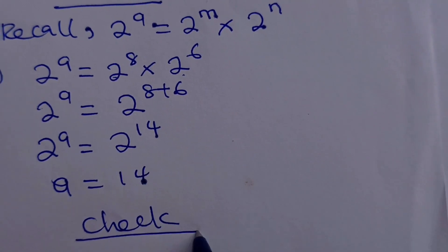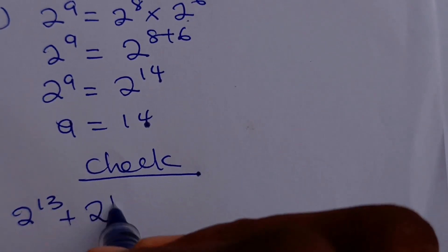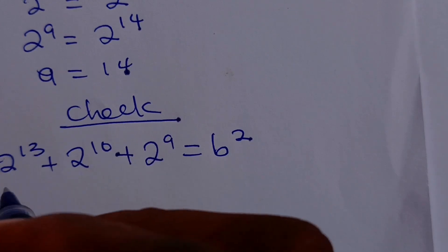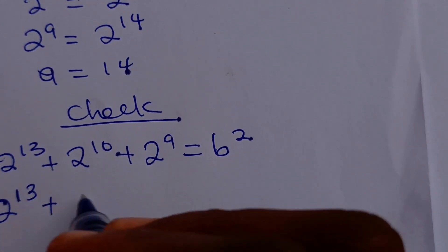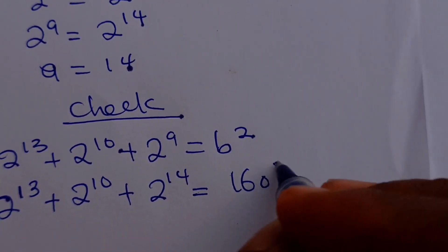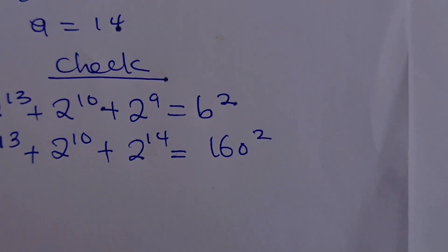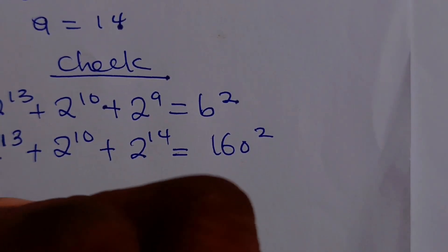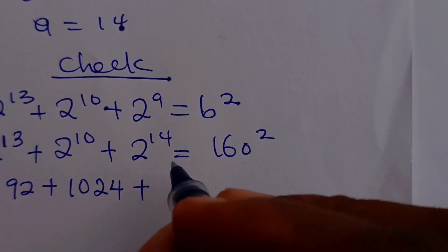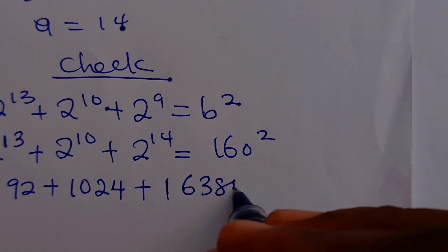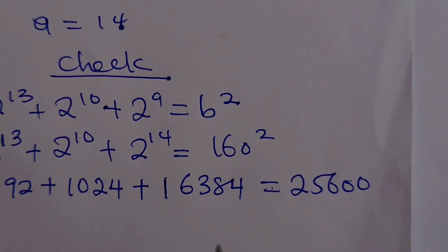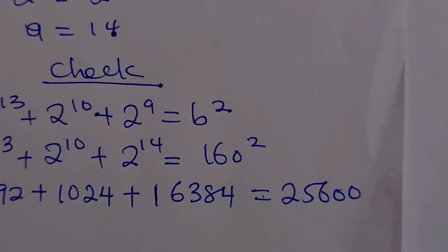Now let's verify. The equation says 2 to the power of 13, plus 2 to the power of 10, plus 2 to the power of A equals B squared. Substituting A equals 14 and B equals 160: 2 to the power of 13 gives 8,192, plus 2 to the power of 10 gives 1,024, plus 2 to the power of 14 gives 16,384, which totals 25,600. And 160 squared also equals 25,600, confirming the answer is correct. Thank you so much for watching!